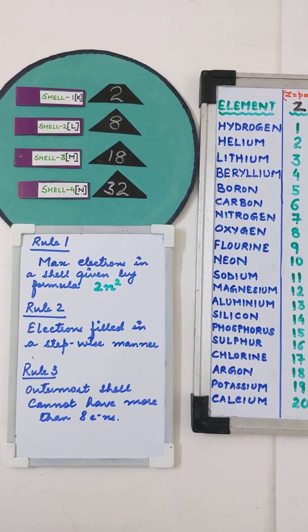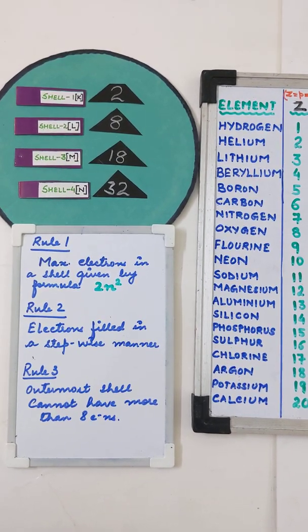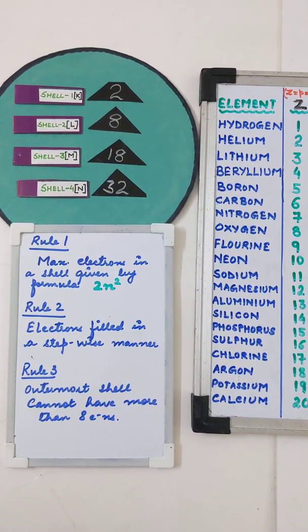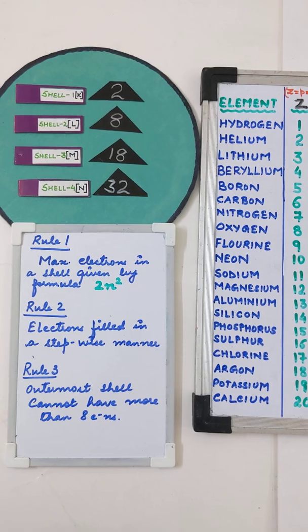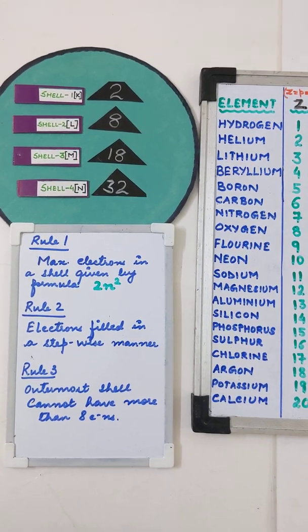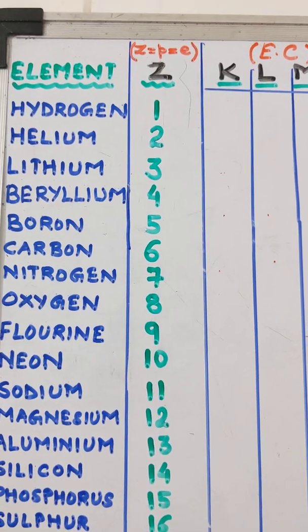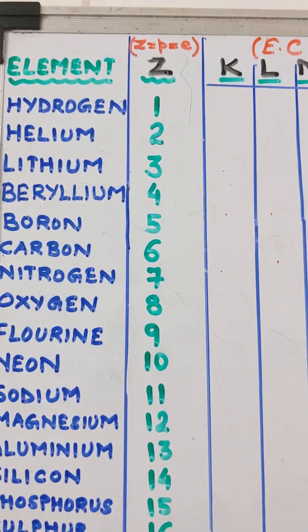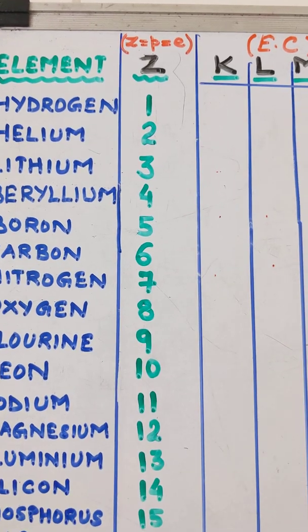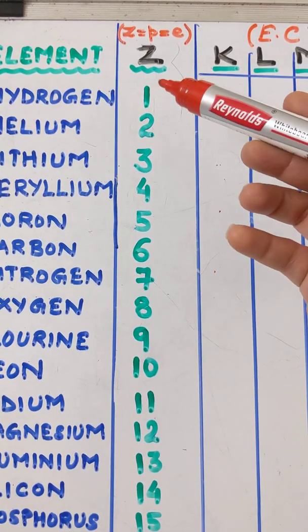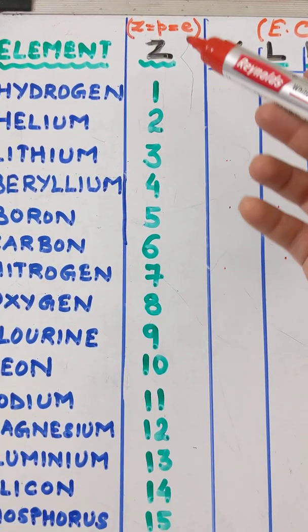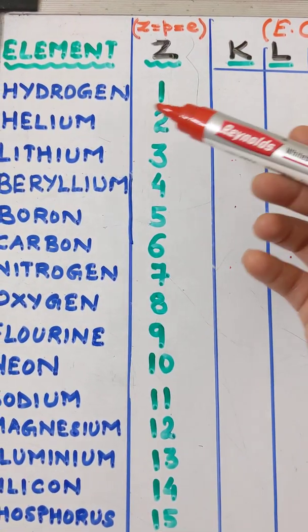Rule number 3 states that the outermost shell can never have more than 8 electrons — we can never put 9 or 10 electrons in the outermost shell. Keeping the rules in mind, we also know that the electronic configuration is always written on the basis of its atomic number, which gives us the number of electrons.